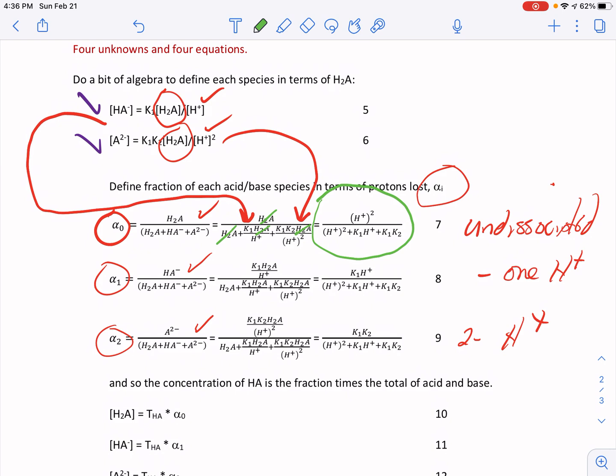Now we go to alpha one and we end up with the same type of formulation, except the numerator slightly different here, but notice the H2As still cancel. And now I get an expression, which is K1 H+ over the same denominator. And then I go to alpha two, which is the fraction that's fully dissociated. And notice I get K1 K2 over the same denominator. So this is helpful because you can calculate that denominator once in Excel or another program, and you just change the numerator slightly and you come up with algebraic solutions for the fraction of alpha zero, alpha one, alpha two.